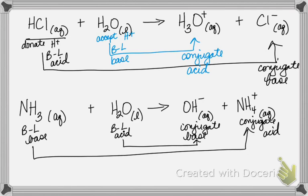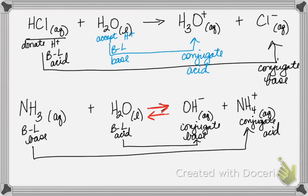This ammonia-water reaction should be written as an equilibrium reaction. The HCl reaction is written with a single arrow because HCl is a strong acid. The NH₃ reaction uses equilibrium arrows because NH₃ is a weak base. We'll talk more about that in a moment.